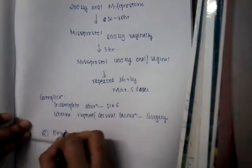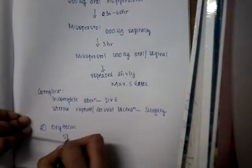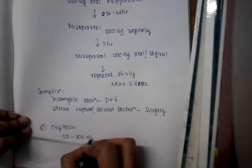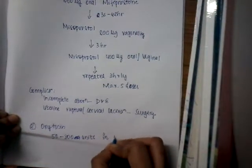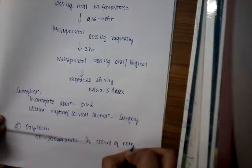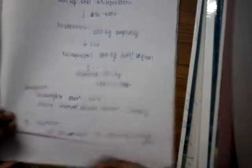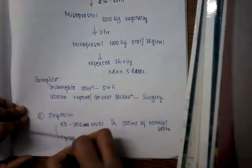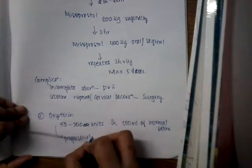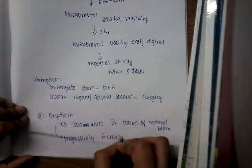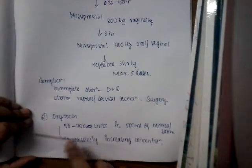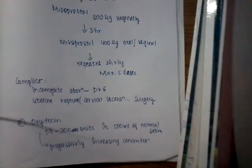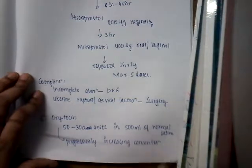The second medical method is oxytocin, given as an infusion. Oxytocin is given in the range of 50 to 300 units in 500 ml of normal saline. The concentration is progressively increased — you do not give 300 units all at once, but slowly increase it within that dosing range.